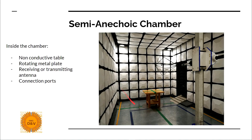Semi-anechoic chamber. This is a shielded chamber where you put your device for emission testing and immunity testing. Your device will be put on a non-conductive table, and under this table a rotating metal plate will rotate your device. Under the plate there are connection ports and sockets. There will also be a receiving antenna, and this antenna will change depending on the frequency range you measure; the height of the antenna will also change. The aim of the system is to measure the device in an environment without electromagnetic noise and measure emission from all sides and at different heights.